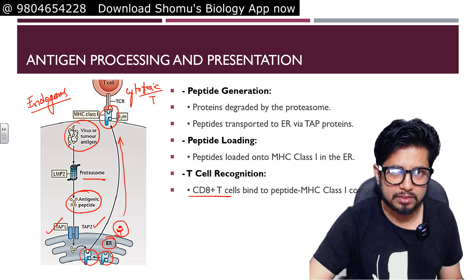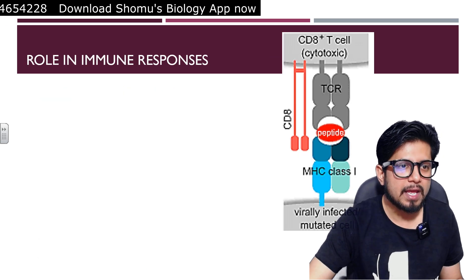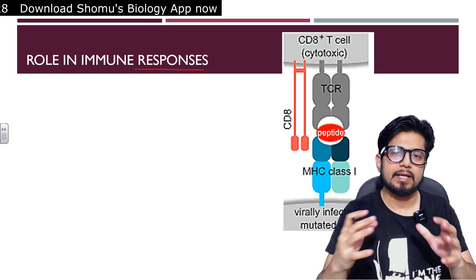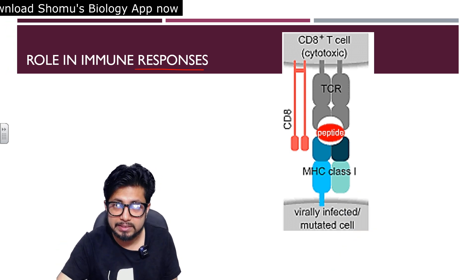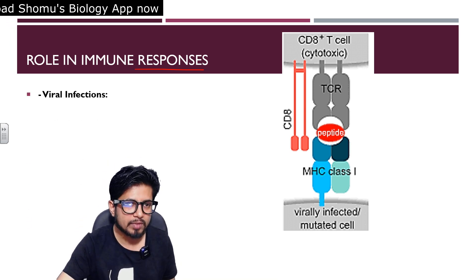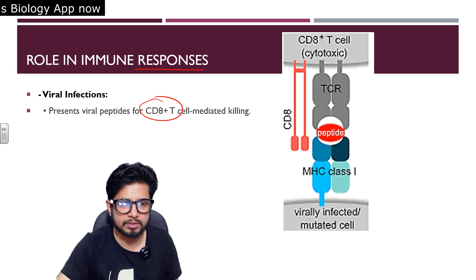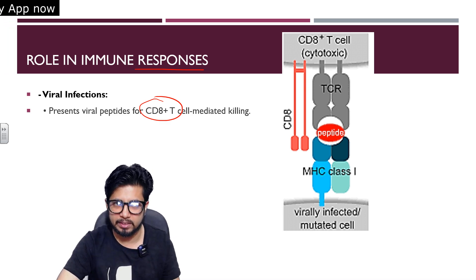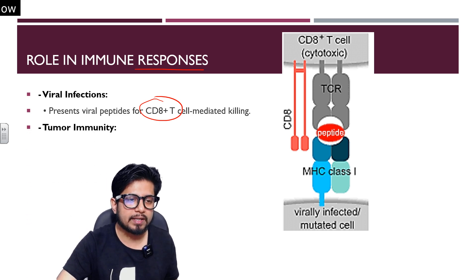CD8+ cytotoxic T cells recognize MHC class 1 and the antigen loaded onto it. In terms of immune response, any endogenous peptide can be fragmented, loaded, and showcased to CD8+ T cells. For viral infections, viral peptides are chopped and showcased so that CD8+ T cells can recognize virus-infected cells and initiate apoptosis via the perforin-granzyme mediated pathway.